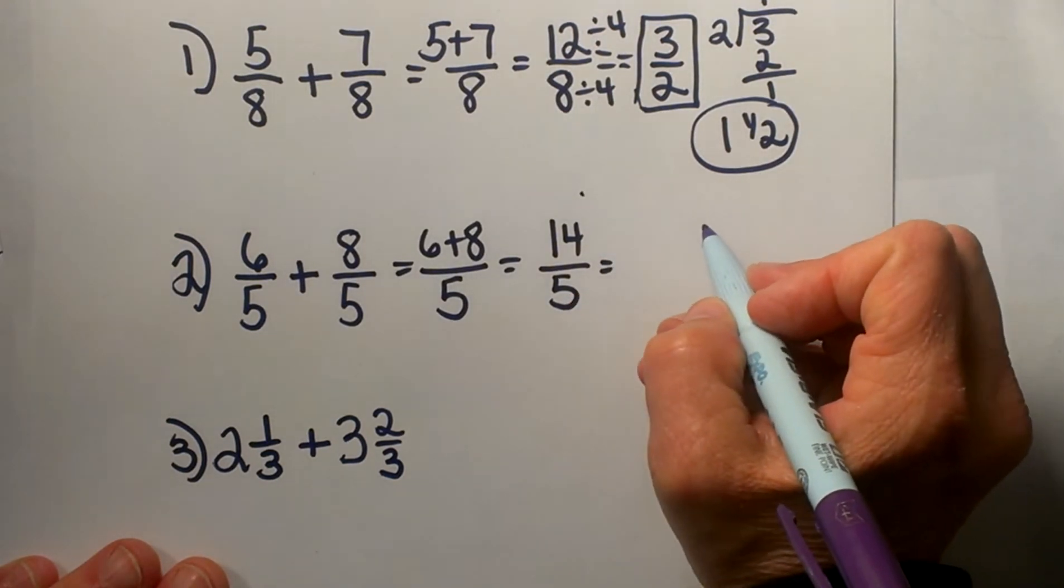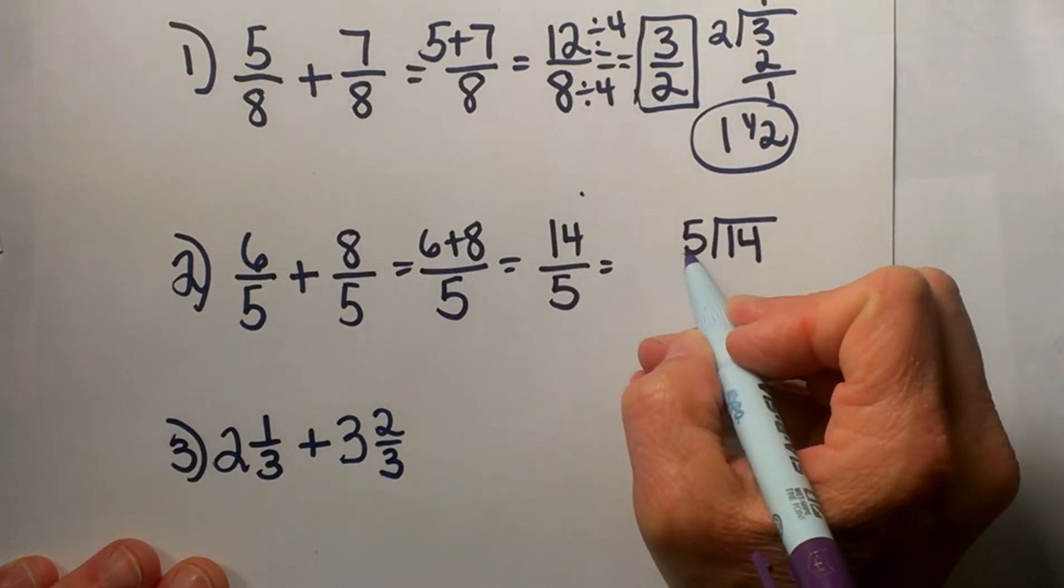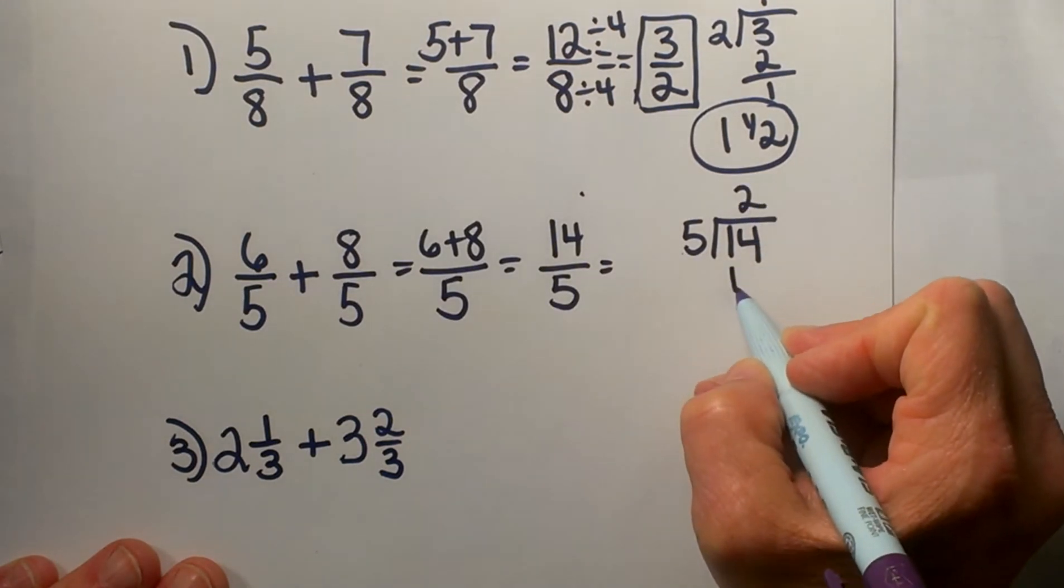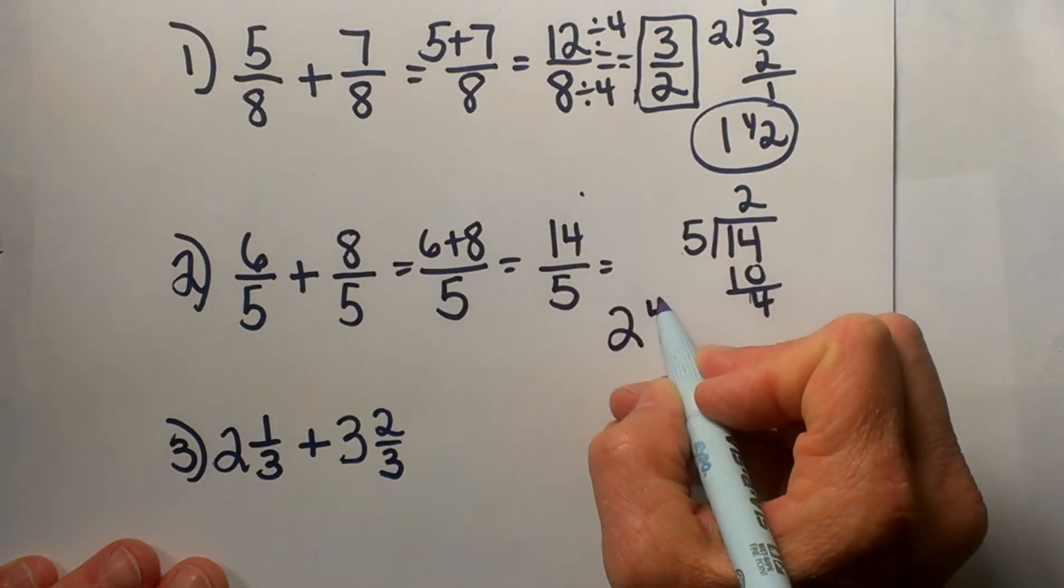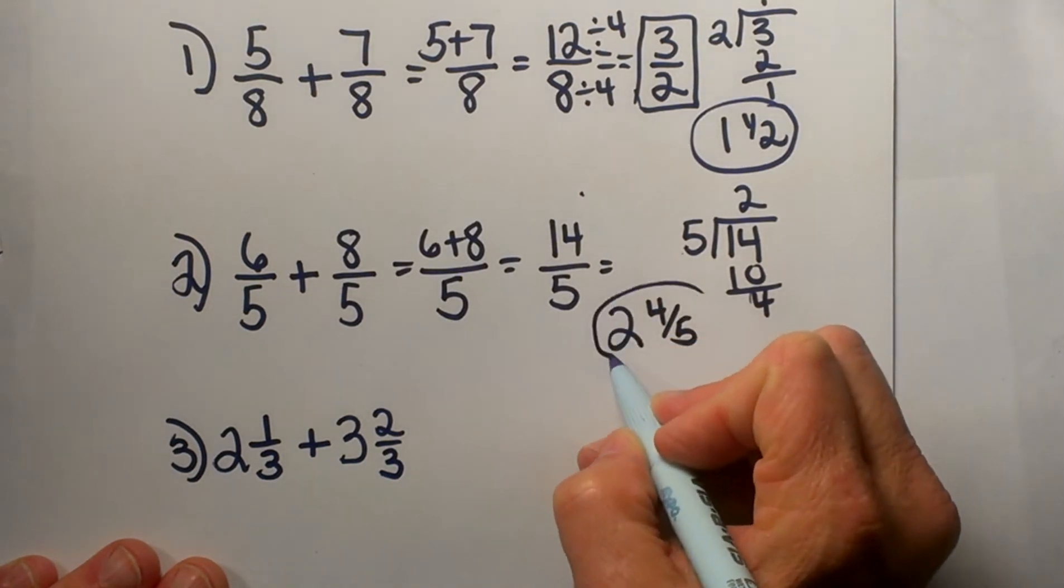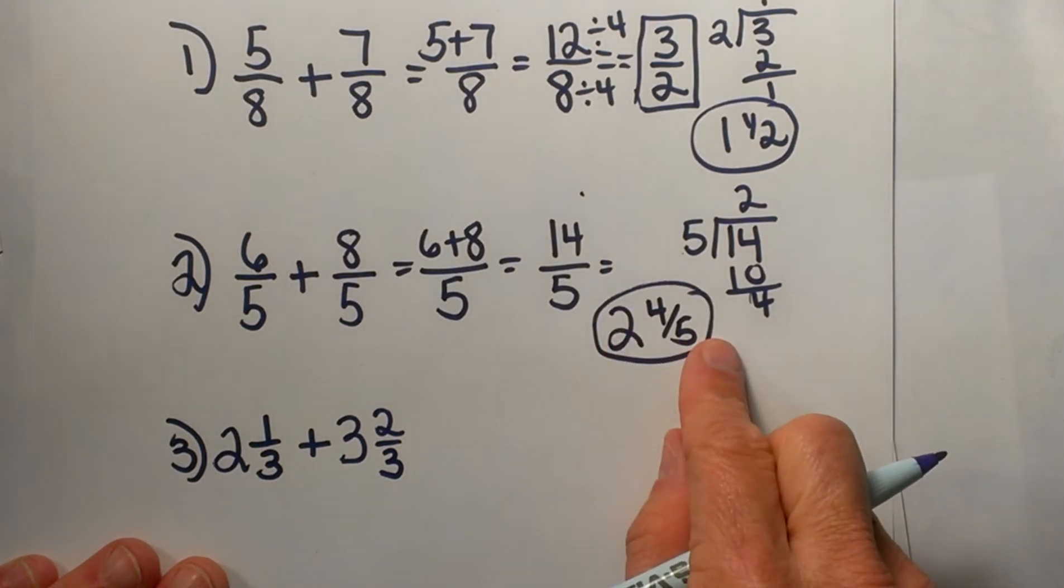Again, it is an improper fraction, so I'm going to divide 5 and see how many times it goes into 14. Well 5 into 14 goes twice, with 4 remaining, so that gives me 2 and the remainder is 4/5. So 2 and 4/5 if we do need to convert it back to a mixed number.